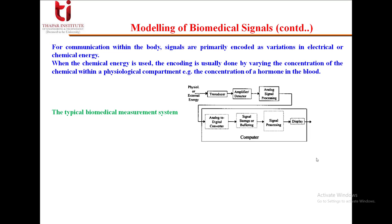This is a typical biomedical measurement system. As we have seen in the very first lecture, we need a transducer, then an amplifier, then analog-to-digital conversion. We have to convert the analog signal into digital. Then we need signal storage or buffering, and finally digital signal processing, and we display the results — that is a computer interface system.